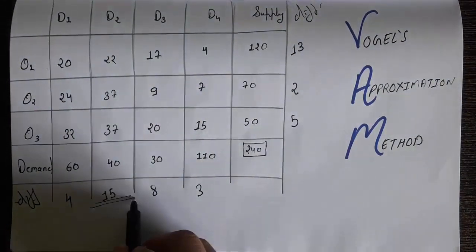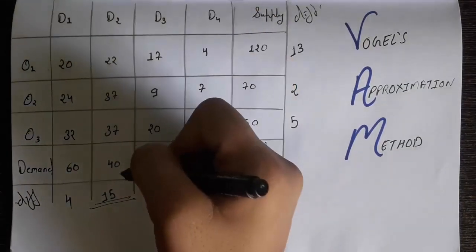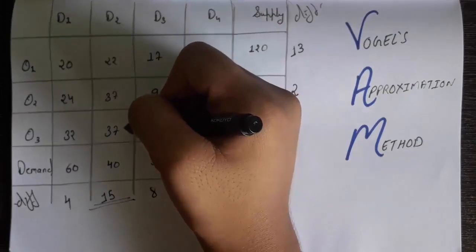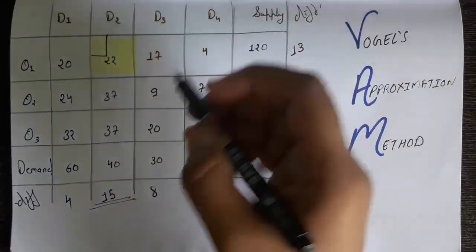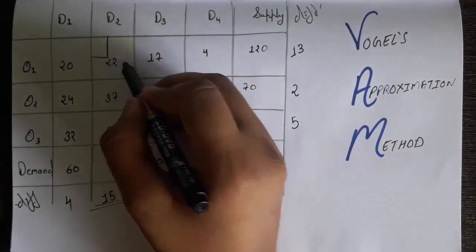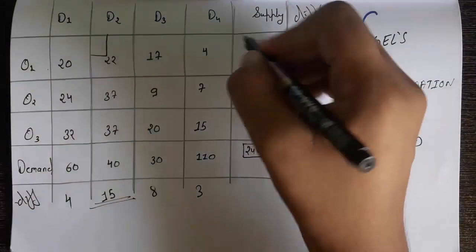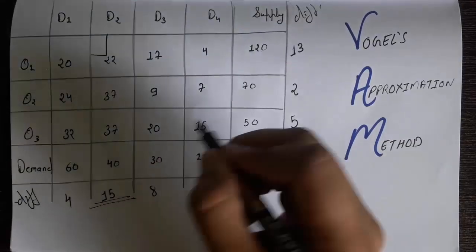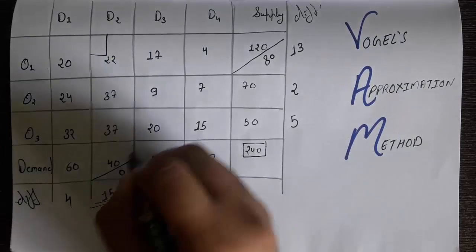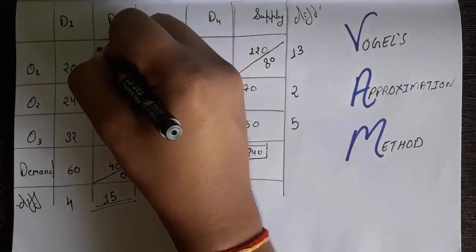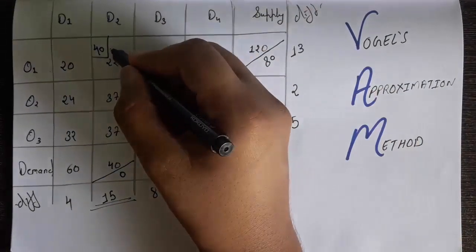The largest difference is 15, which belongs to column D2. We look at the whole D2 column and find the smallest number. Among 37, 37, and 22, the smallest is 22, so we make a box there. The value 22 intersects at a supply of 120 and a demand of 40. We take the minimum of these two: 120 minus 40 equals 80, so supply becomes 80 and demand becomes 0. We write 40 in the allocation cell.